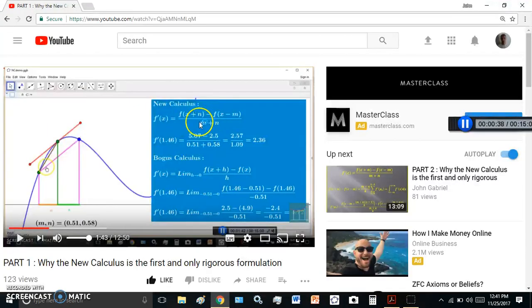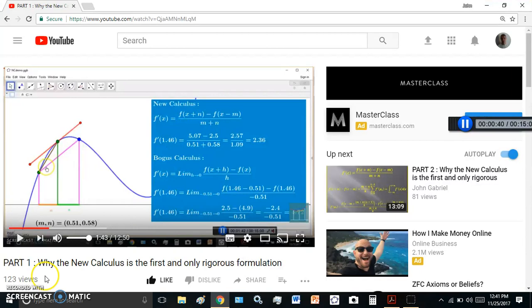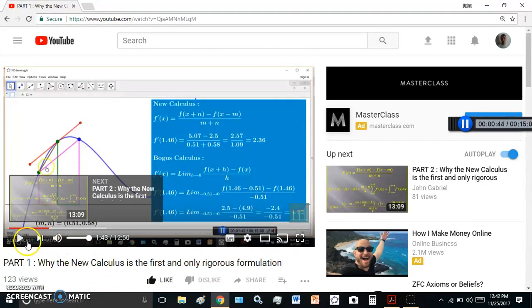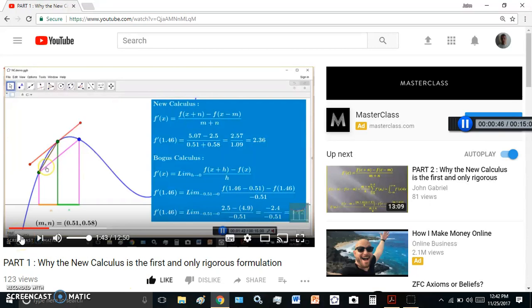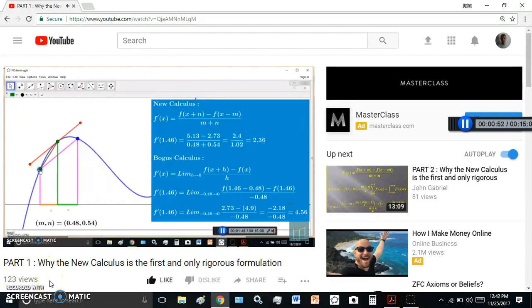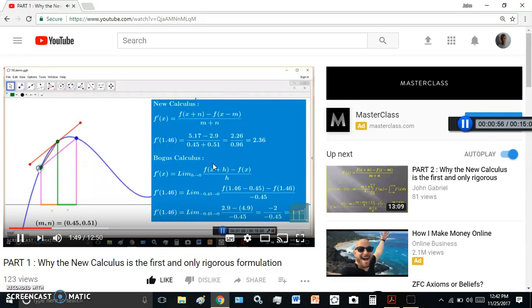So remember in one of my videos called Why the New Calculus is the First and Only Rigorous Formulation I said this. Let's quickly listen to this and then I'll explain it. So there are infinitely many mn pairs that will give you the slope of that tangent line.